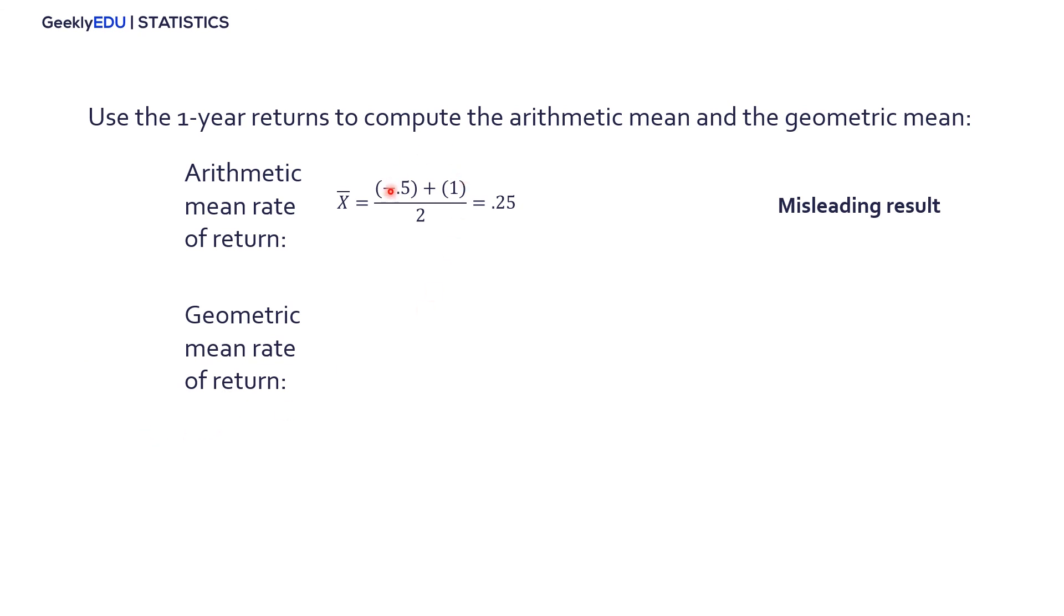But, if we use the geometric mean rate of return, let's plug these numbers into the formula. So, here's our formula. So, again, 1 plus negative 0.5 times 1 plus 1, all of that raised to the 1 half power minus 1. Well, we simplify this and this, that gets us 0.5 times 2 to the 1 half power minus 1. All of this is 1, so we end up getting 1 to the 1 half power minus 1. 1 to the 1 half power is the same thing as saying the square root of 1, which is 1.